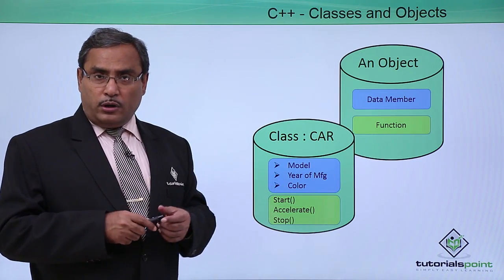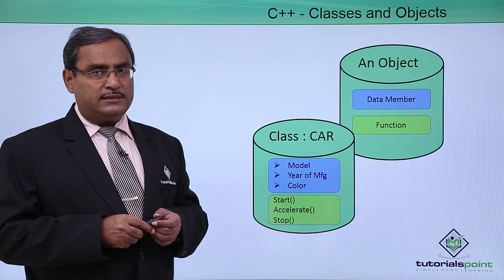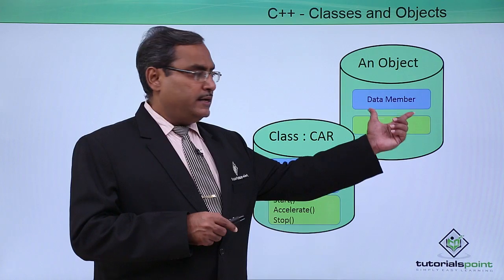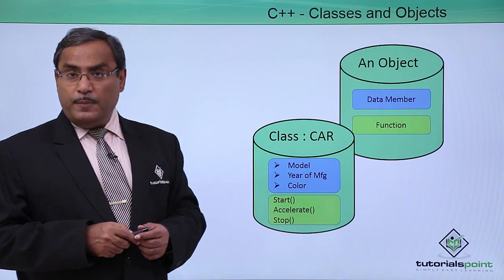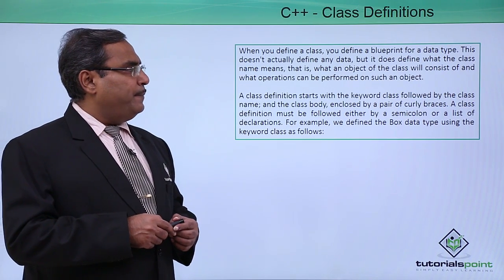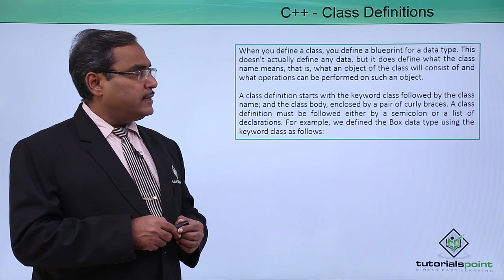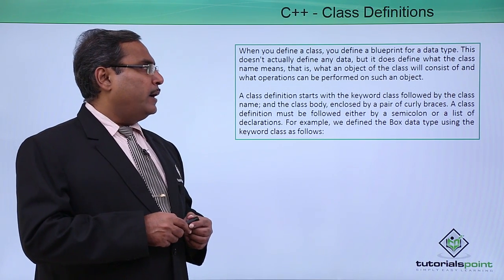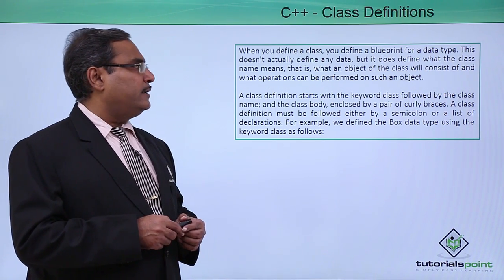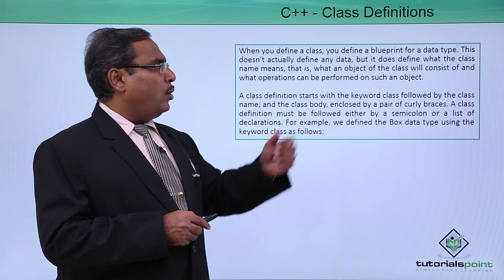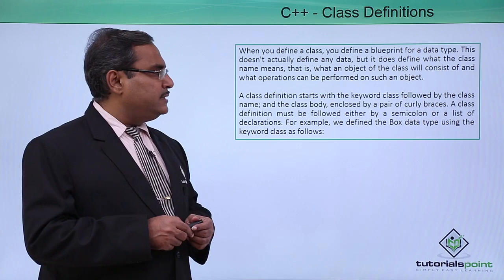An object can also be called an instance of a class. An object consists of data members and member functions. When you define a class, you define a blueprint for a data type. This does not actually define any data,